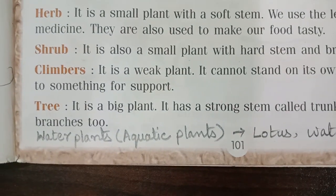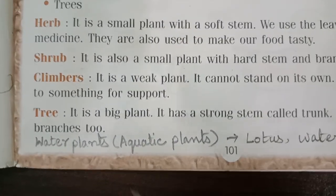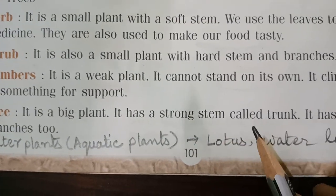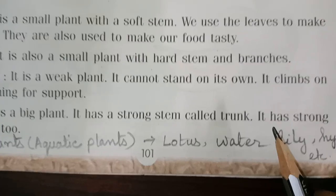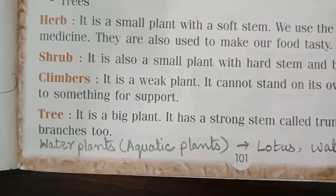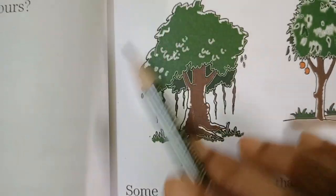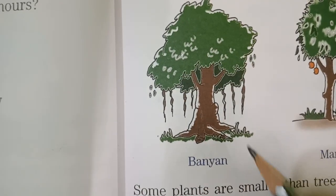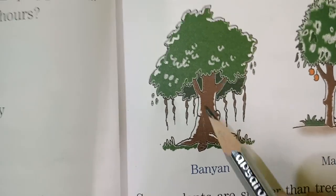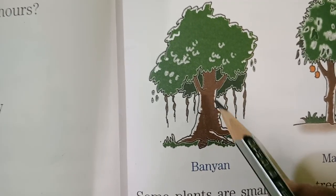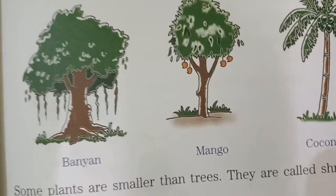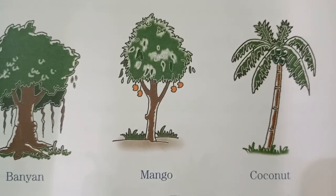Then comes the tree. It is a big plant. It has a strong stem called trunk. It has strong branches too. Like this is a banyan tree — you can see it is a strong tree and it has a trunk. This brown portion is its trunk. This is mango tree. This is coconut.